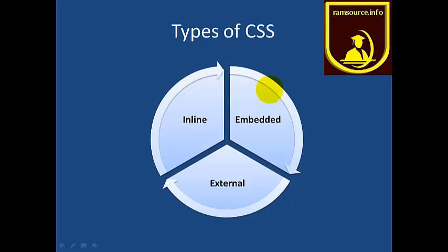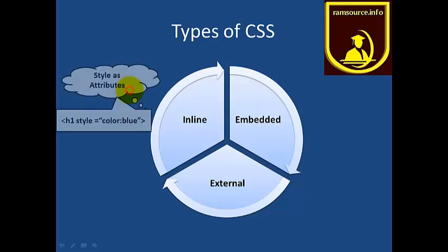There are three types of CSS. The first one is inline. In inline CSS, we use a specific style attribute directly on the element — for example, h1 with the attribute style equals color colon blue. That is an inline style sheet.